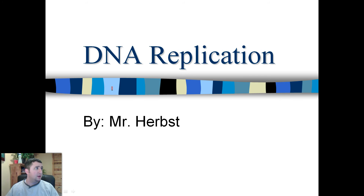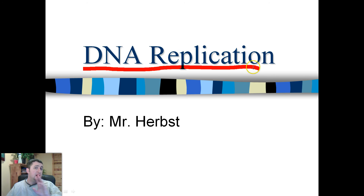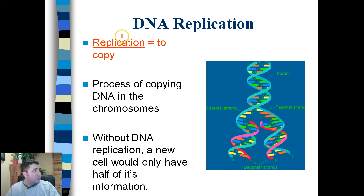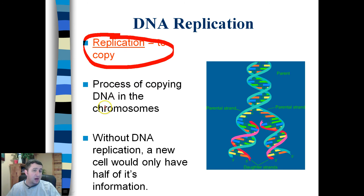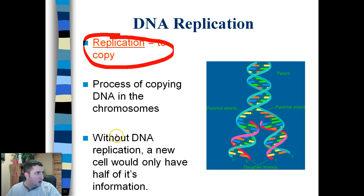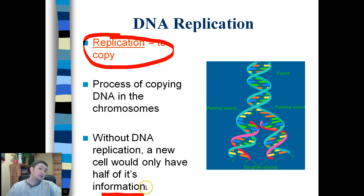Hey guys, this is Mr. Herbst here, and today's focus is going to be on DNA replication — how DNA makes a copy of itself. Replication means to copy; it's the process of copying all of the chromosomes, or all the DNA that makes up chromosomes. Without DNA replication, a new cell would only have half of its information, and that's bad — the cell would die.